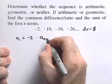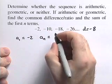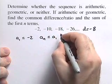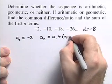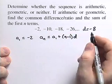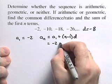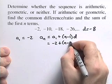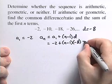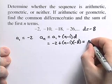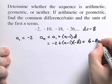The nth term for an arithmetic sequence is given by the first term plus n minus 1 times the common difference. So in this case, we'll have negative 2 plus n minus 1 times negative 8. We clean that up. We'll see that our nth term is given by 6 minus 8n.